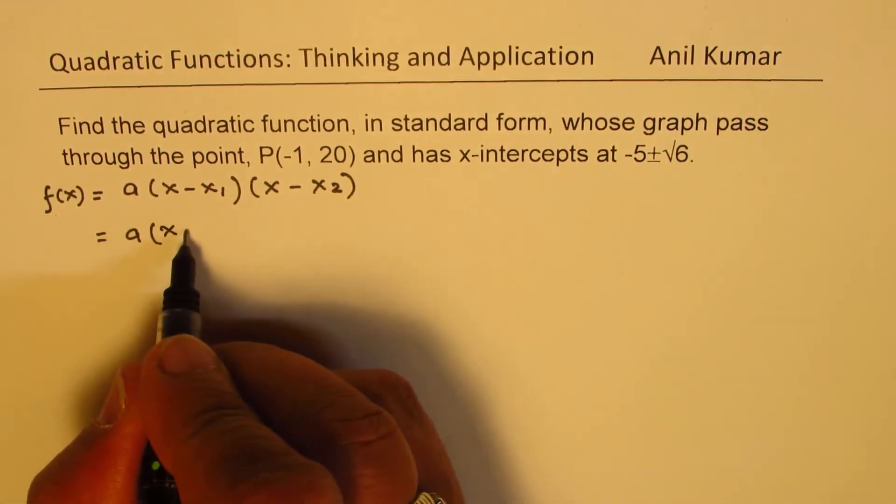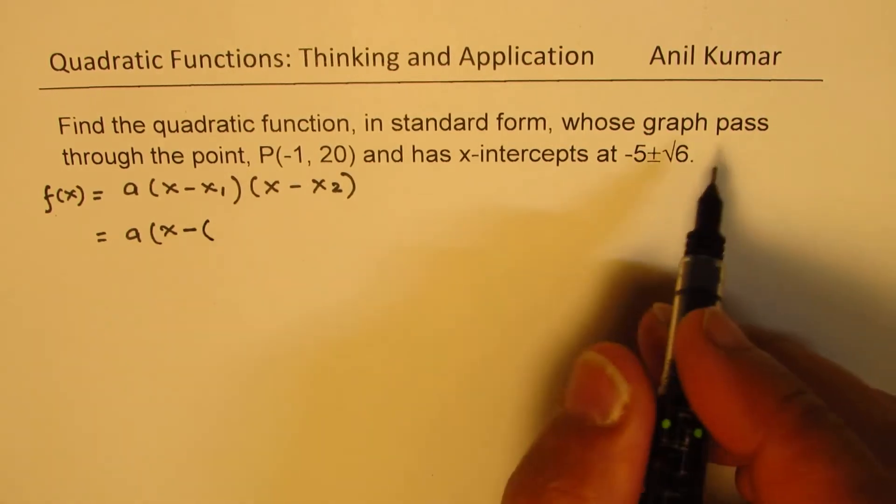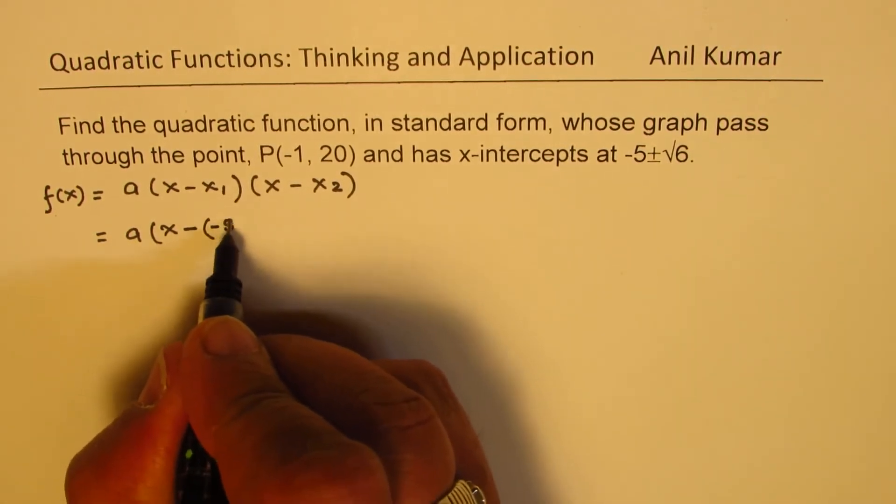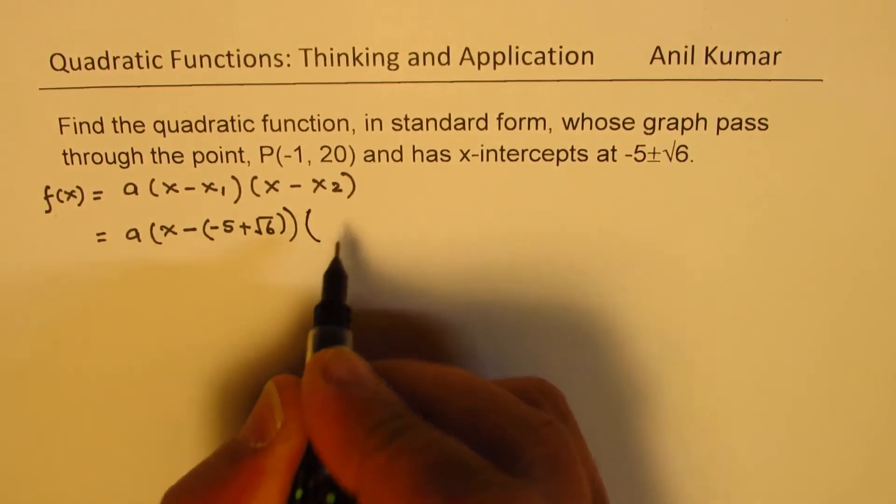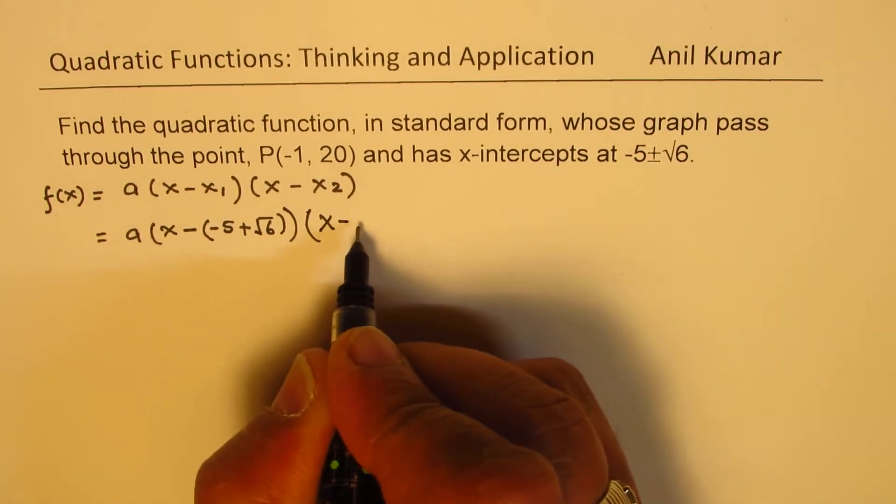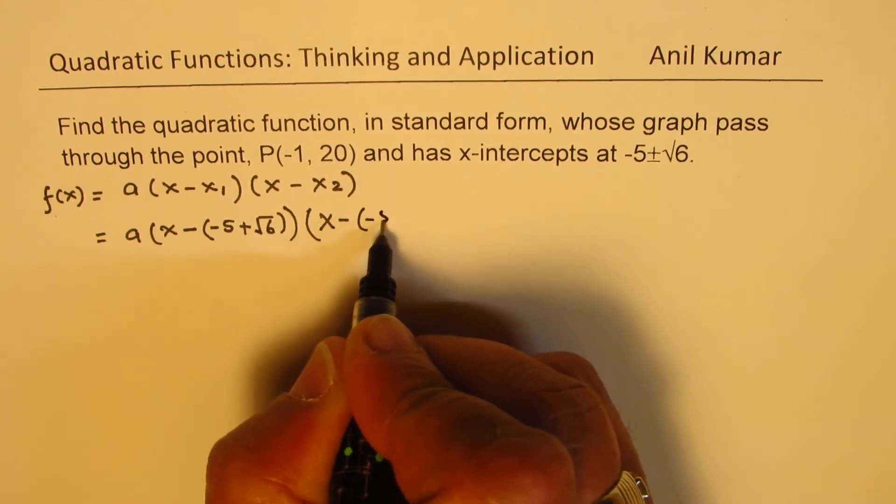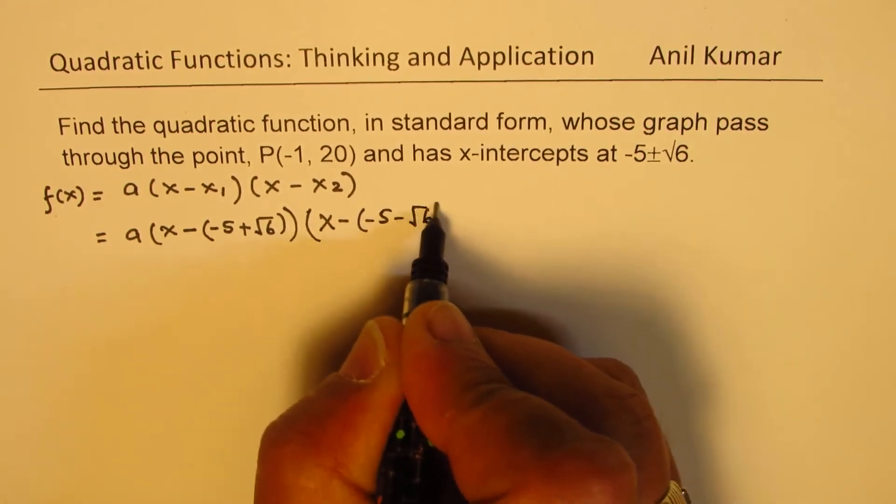So we can write this as x minus, let me write in brackets, (-5 + √6), times the other factor, which is x minus (-5 - √6), correct?